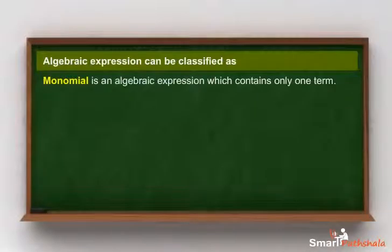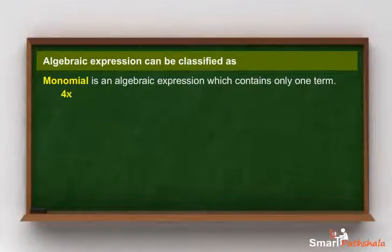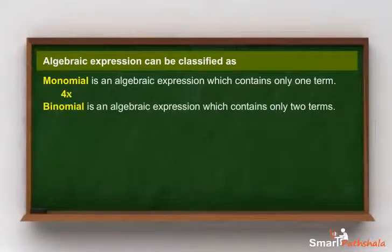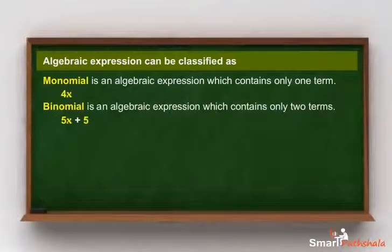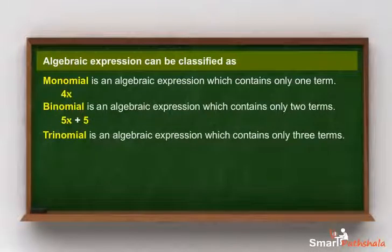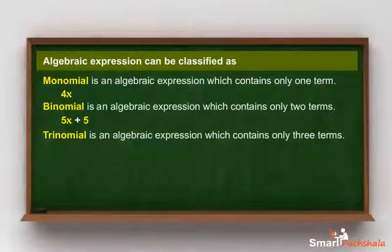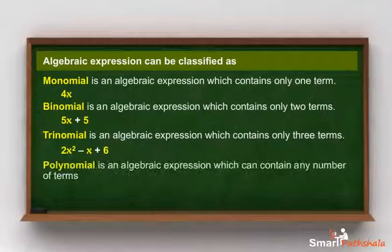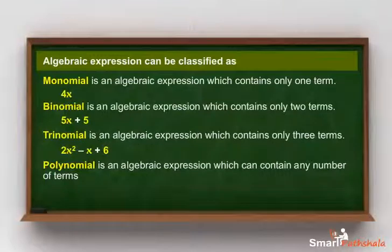A monomial is an algebraic expression which contains only one term. A binomial is an algebraic expression which contains only two terms. A trinomial is an algebraic expression which contains only three terms. A polynomial is an algebraic expression which can contain any number of terms.